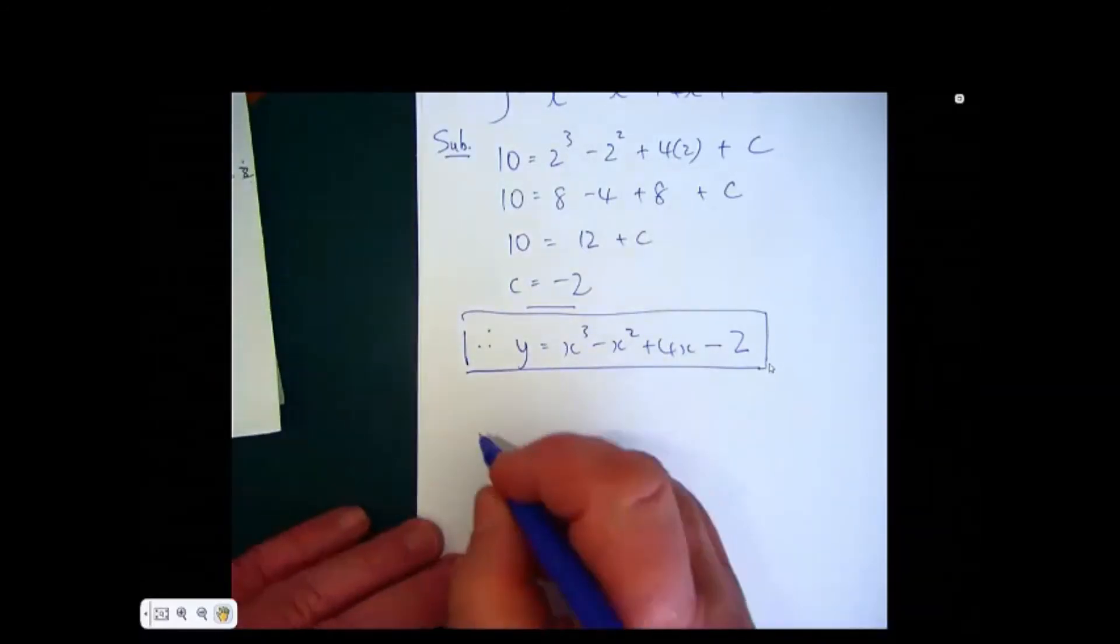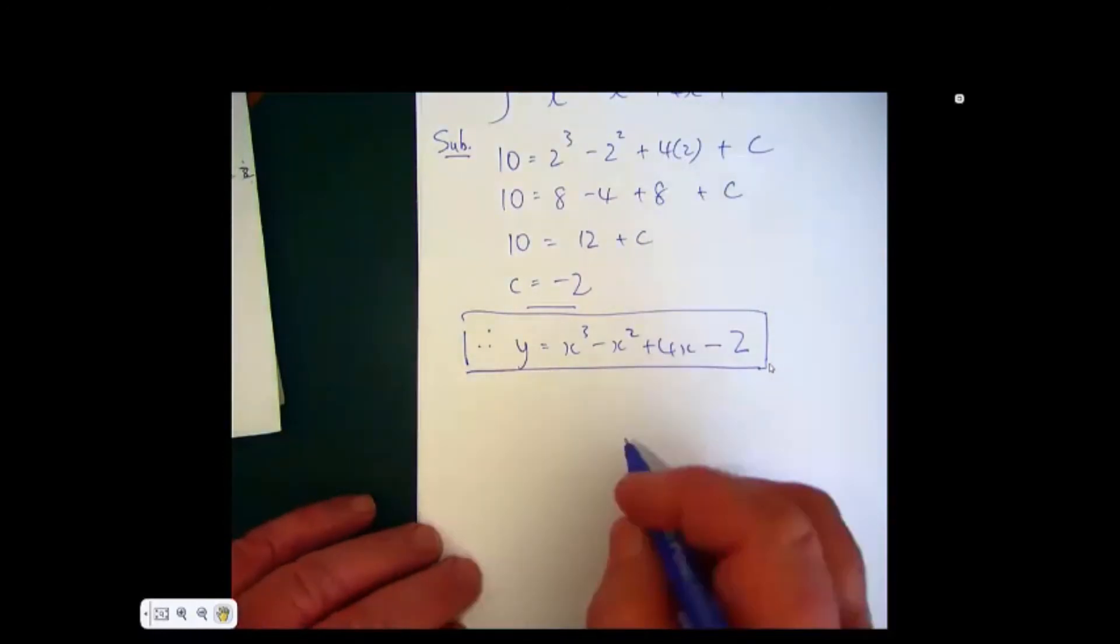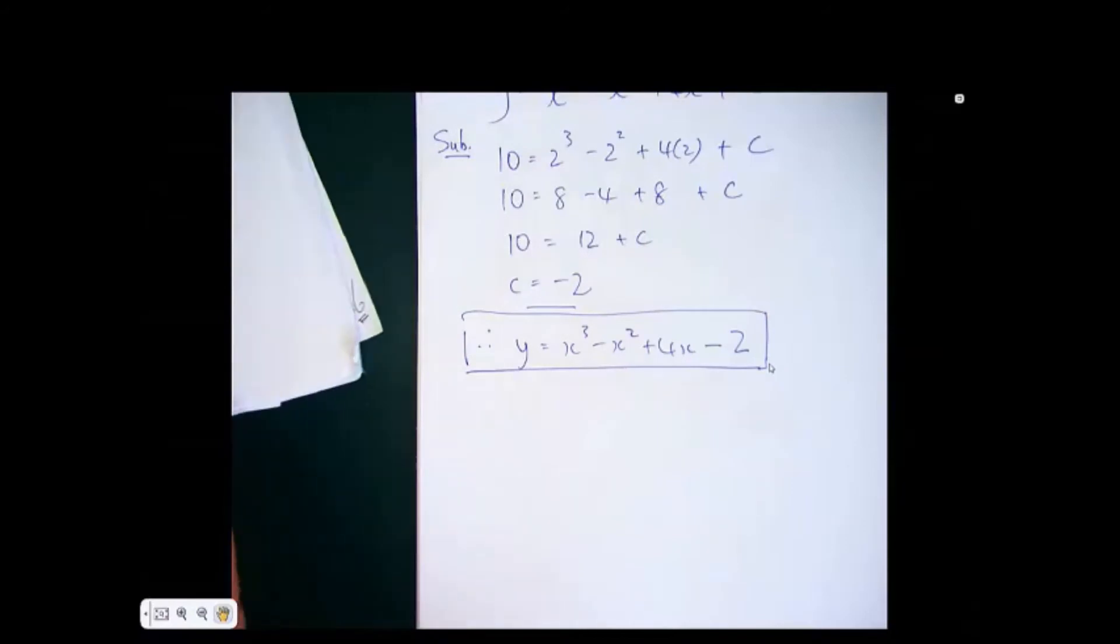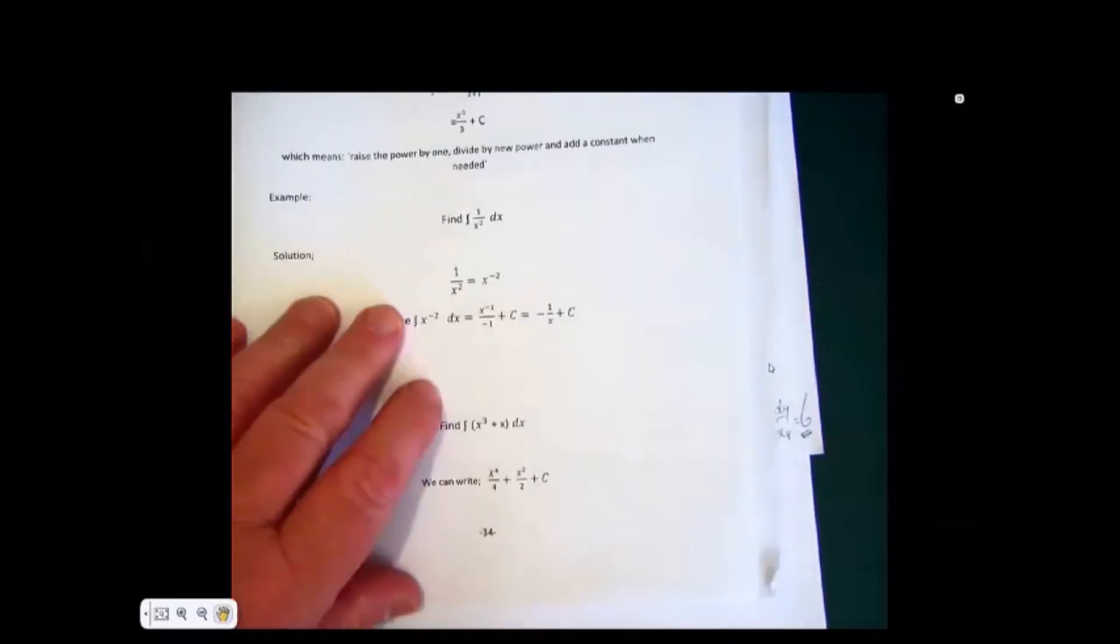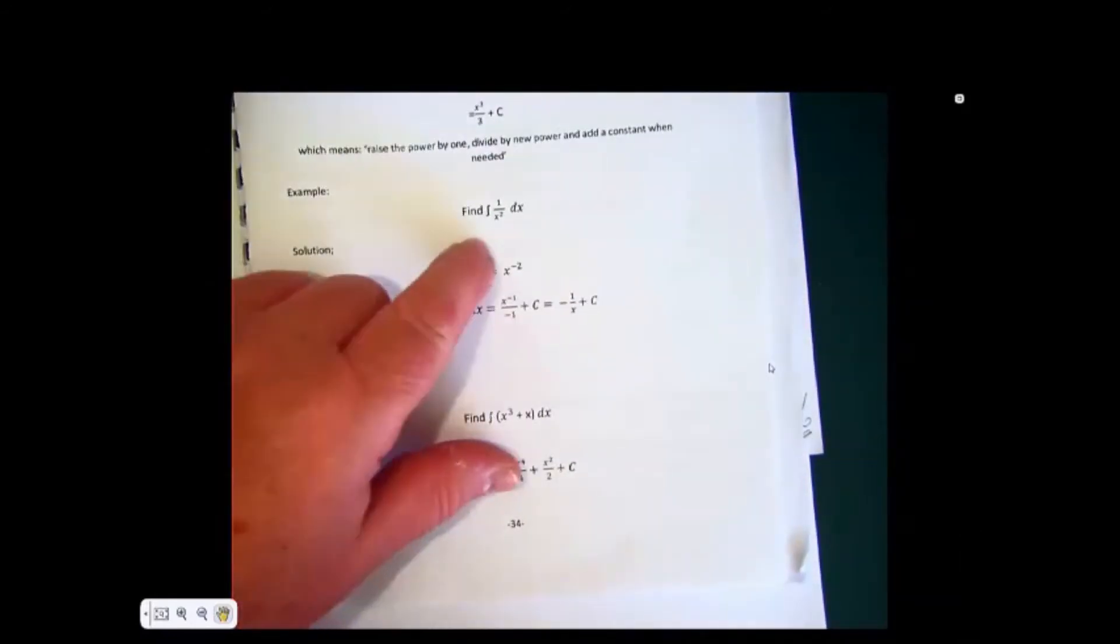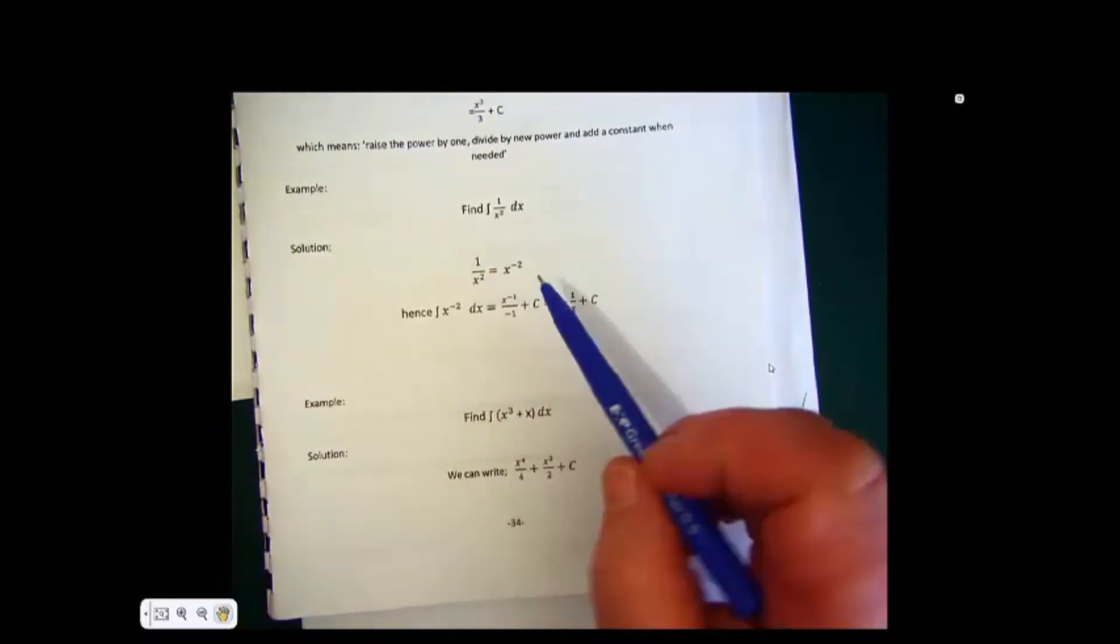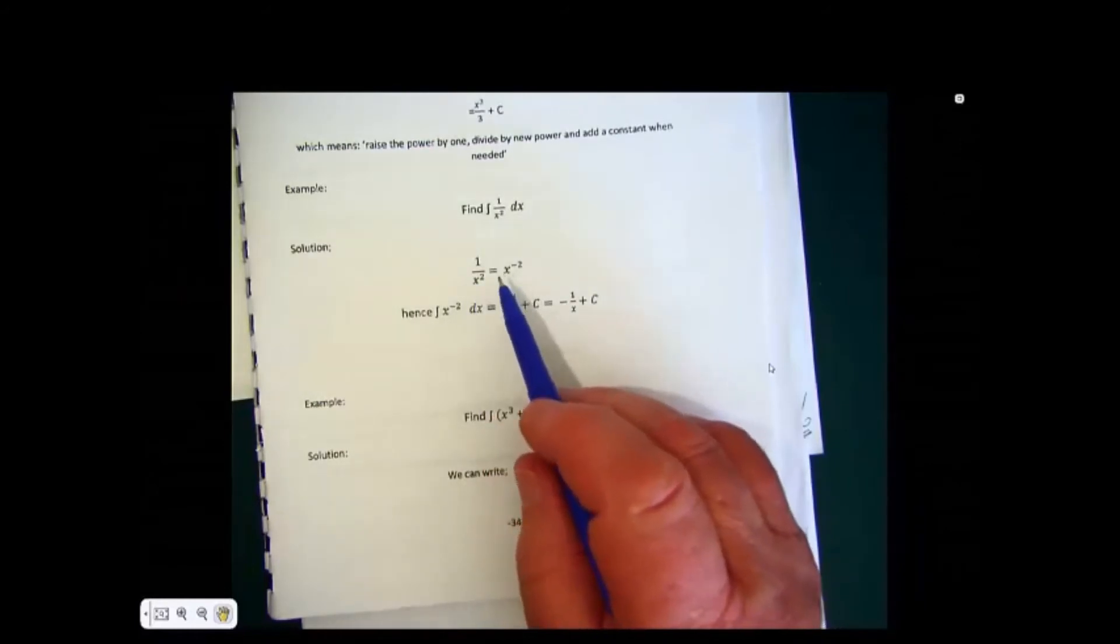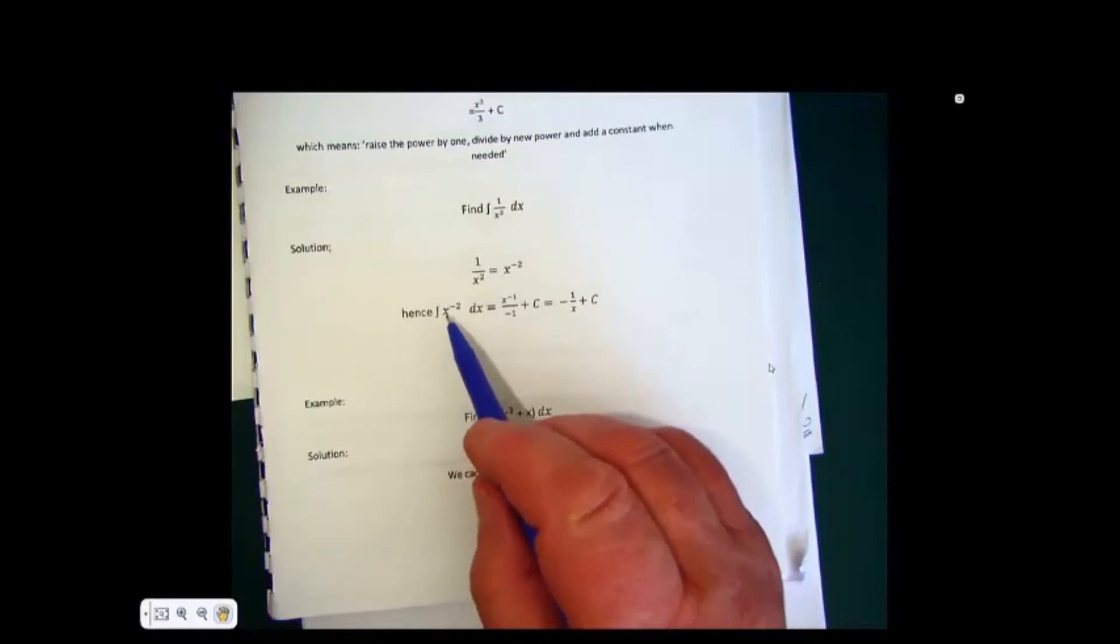Now sometimes we have limits here, so we'll have a look at limits a little bit later on. And I'll just go back into the book now to show you the worked example. Example, find the integral of 1 over x squared.